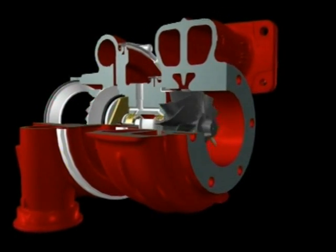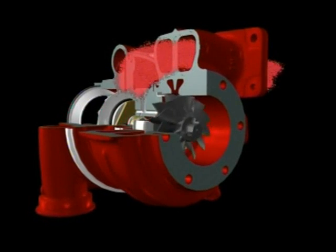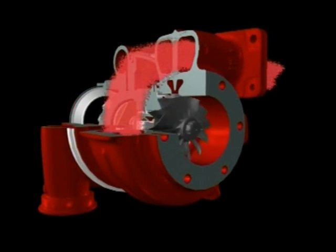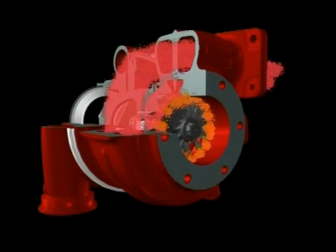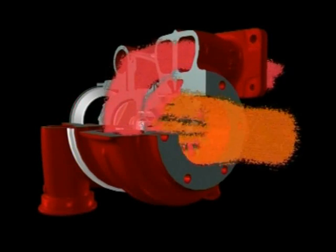The exhaust gas is guided into the turbocharger by the turbine housing. The energy in the exhaust gas turns the turbine. Once the gas has passed through the wheel, it leaves the turbine housing via the exhaust outlet area.